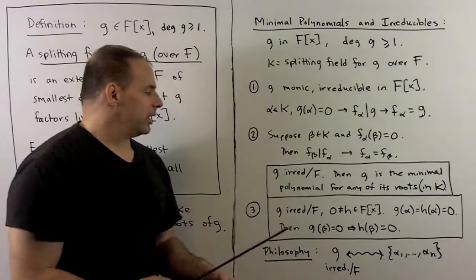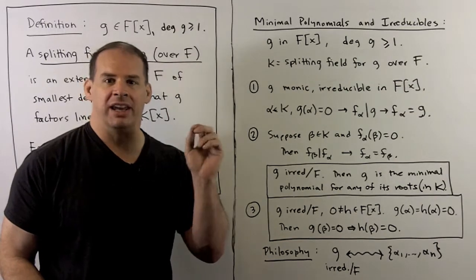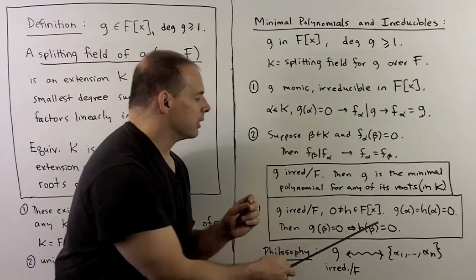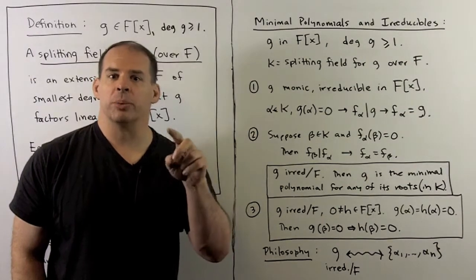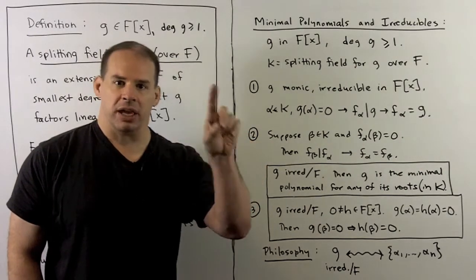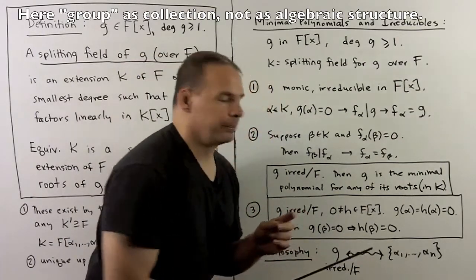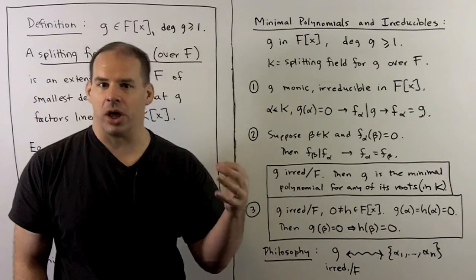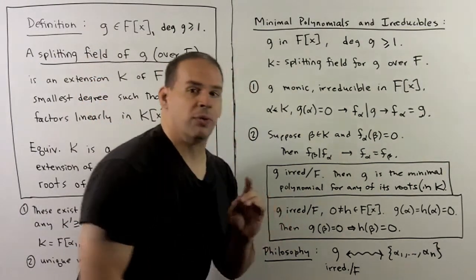To interpret: if g is irreducible over f, then g is the minimal polynomial for any of its roots. Moreover, if g is irreducible over f and h is a non-zero polynomial with coefficients in f having alpha as a root of both g and h, then whenever beta is a root of g, it is also a root of h. This is useful for factoring: if we find a root of h that's a root of an irreducible, then all roots of that irreducible are automatically roots of h. When we have an irreducible polynomial over f, all of its roots come as a group — and we'll see there's structure binding them together through group automorphisms.